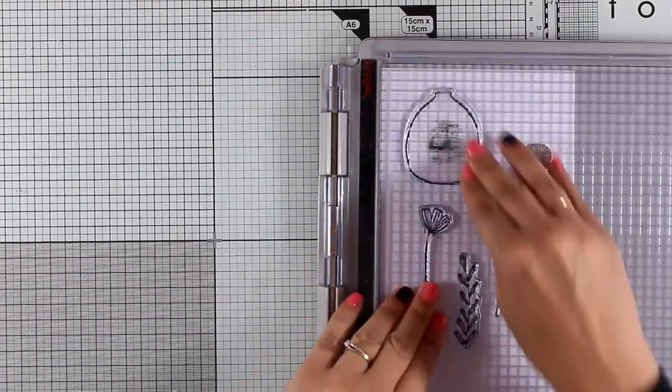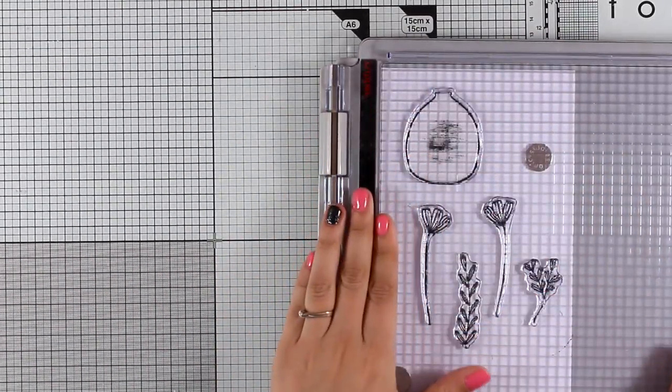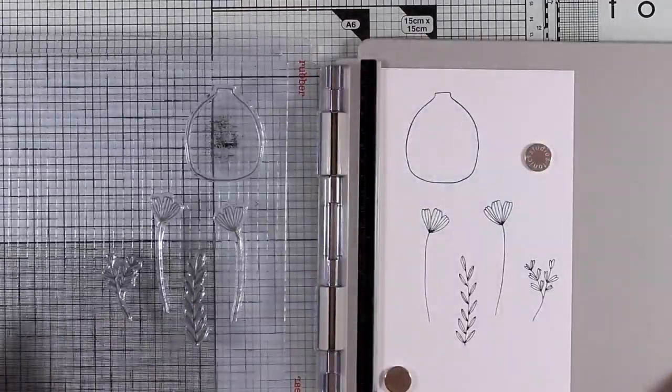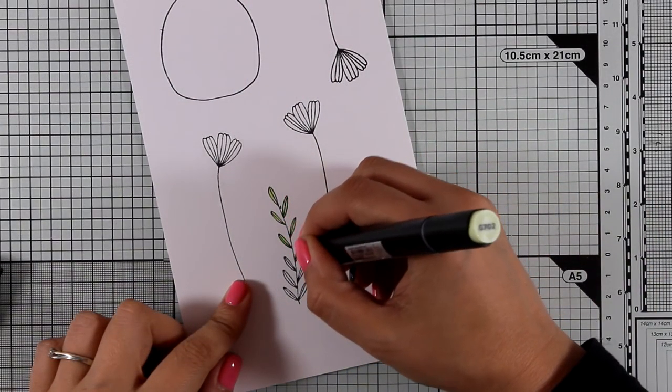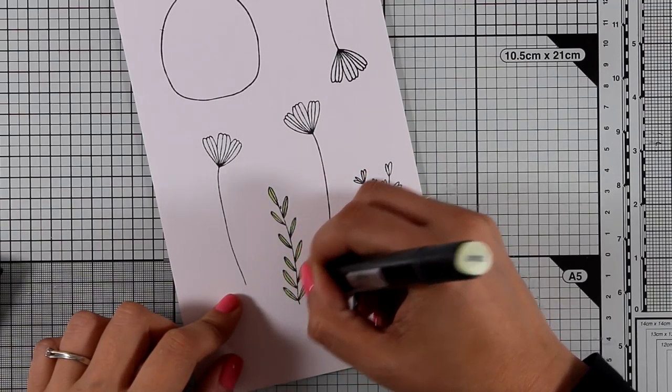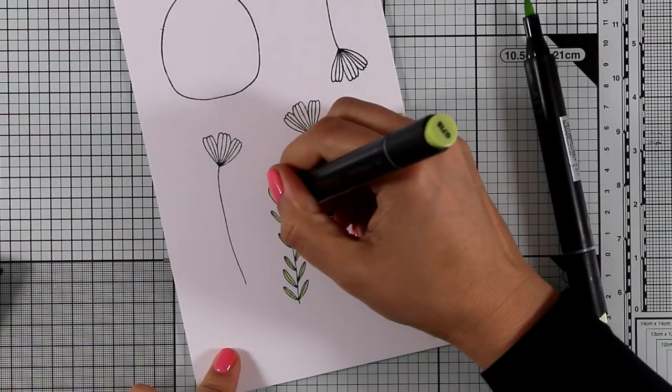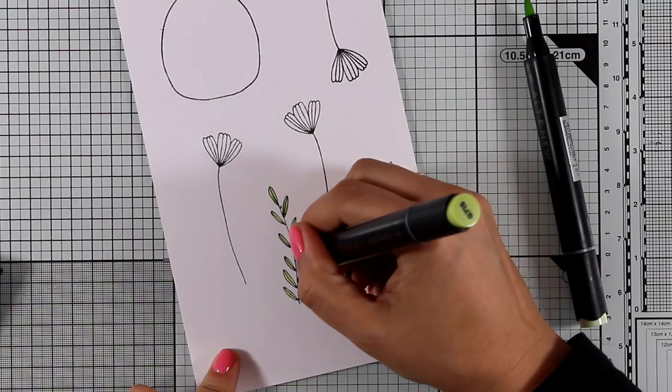I made sure that the ink I used was alcohol marker friendly since I'll be using alcohol markers to color everything. The images are quite small, so you don't need to spend a lot of time coloring. I'm going to use only a couple of shades of green for the leaves and a couple of pinks for the flowers.